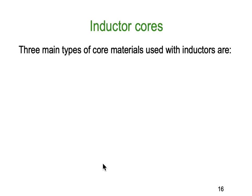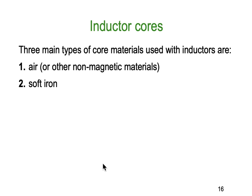There are three main types of core materials used in inductors. First, air and other non-magnetic materials — if you use plastic, it acts like air. Second, soft iron, which is very common and has great ability to conduct magnetic circuits, giving really good inductance. Third, ferrite — a ceramic with iron embedded in it — which is very light, strong, quite brittle, but handles high frequencies very well.